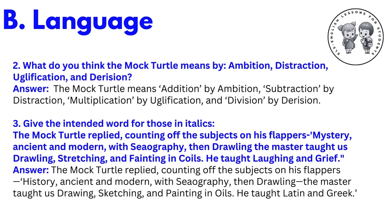What do you think the Mock Turtle means by 'Ambition, Distraction, Uglification, and Derision'? Answer: The Mock Turtle means Addition by Ambition, Subtraction by Distraction, Multiplication by Uglification, and Division by Derision. Next exercise: give the intended word for those in italics. The Mock Turtle replied counting off the subjects on his flappers — 'Mystery, ancient and modern, with Geography; then Drawing — the master taught us Drawing, Stretching, and Fainting in Coils. He taught Laughing and Grief.' The intended words are: History ancient and modern with Geography; the master taught Drawing, Sketching, and Painting in Oils; he taught Latin and Greek.